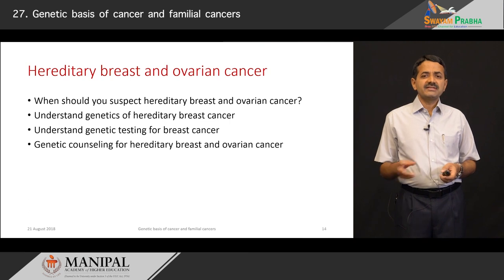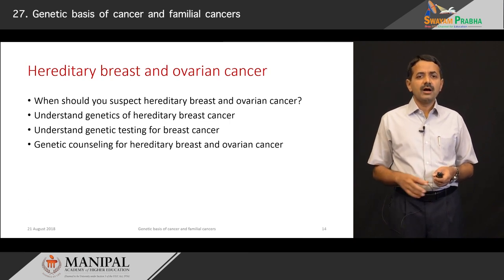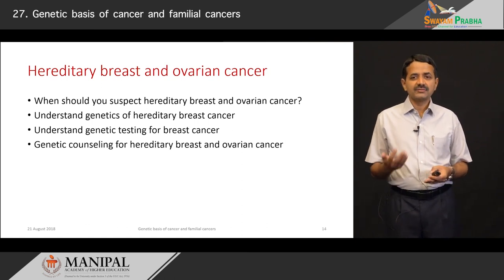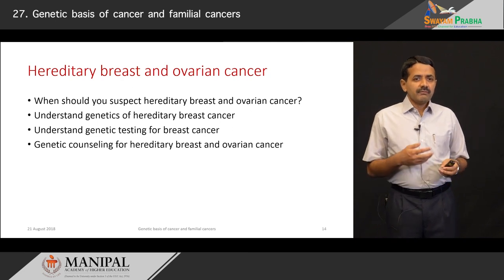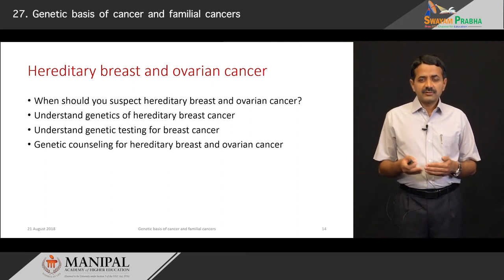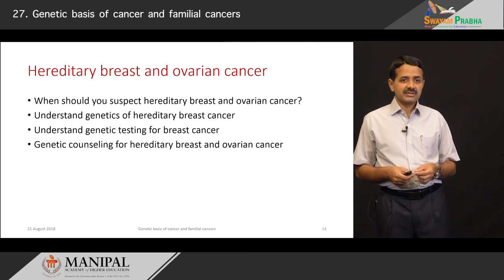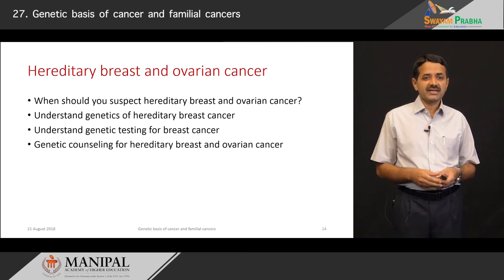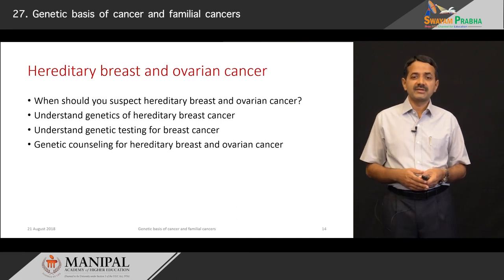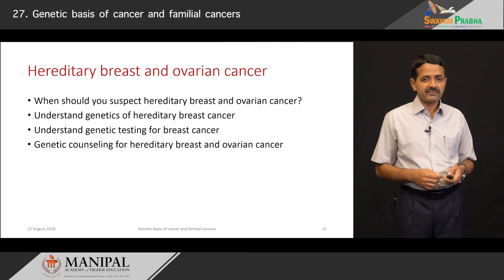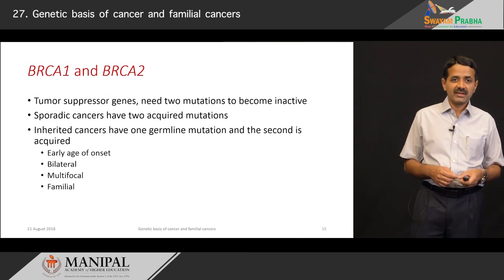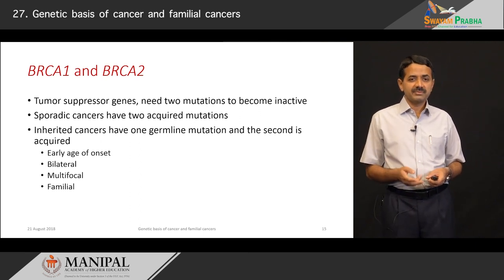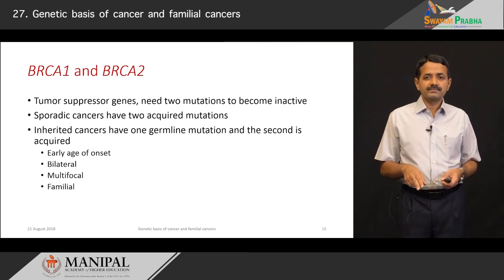I have taken hereditary breast and ovarian cancer as an illustration to show how familial cancers are manifested, investigated, managed, and counselled. We will address when to suspect hereditary breast and ovarian cancer, understand its genetic basis, understand genetic testing for breast cancer, and how to perform genetic counselling. BRCA1 and BRCA2 are two tumor suppressor genes that need two mutations to become inactive.